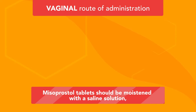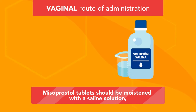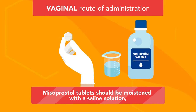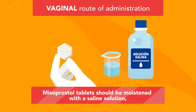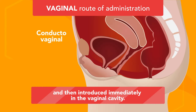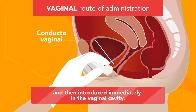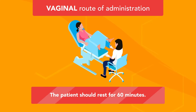Vaginal route of administration: Misoprostol tablets should be moistened with a saline solution and then introduced immediately into the vaginal cavity. The patient should rest for 60 minutes.